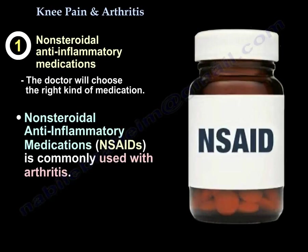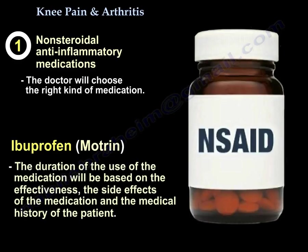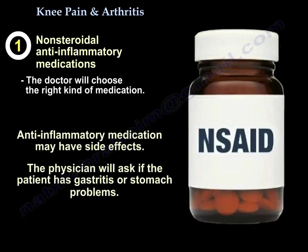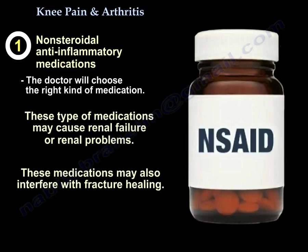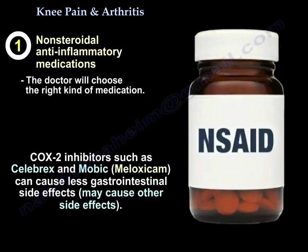Non-steroidal anti-inflammatory medication is commonly used with arthritis. For example, ibuprofen or Motrin. The selection of this medication is based on the physician's preference and the patient's susceptibility. The duration of use will be based on the effectiveness, the side effects, and the medical history of the patient. Anti-inflammatory medication may have side effects. The physician will ask if the patient has gastritis or stomach problems. These medications may cause renal failure or renal problems and may also interfere with fracture healing. COX-2 inhibitors such as Celebrex and Mobic (Meloxicam) can cause less gastrointestinal side effects, but may also cause other side effects.